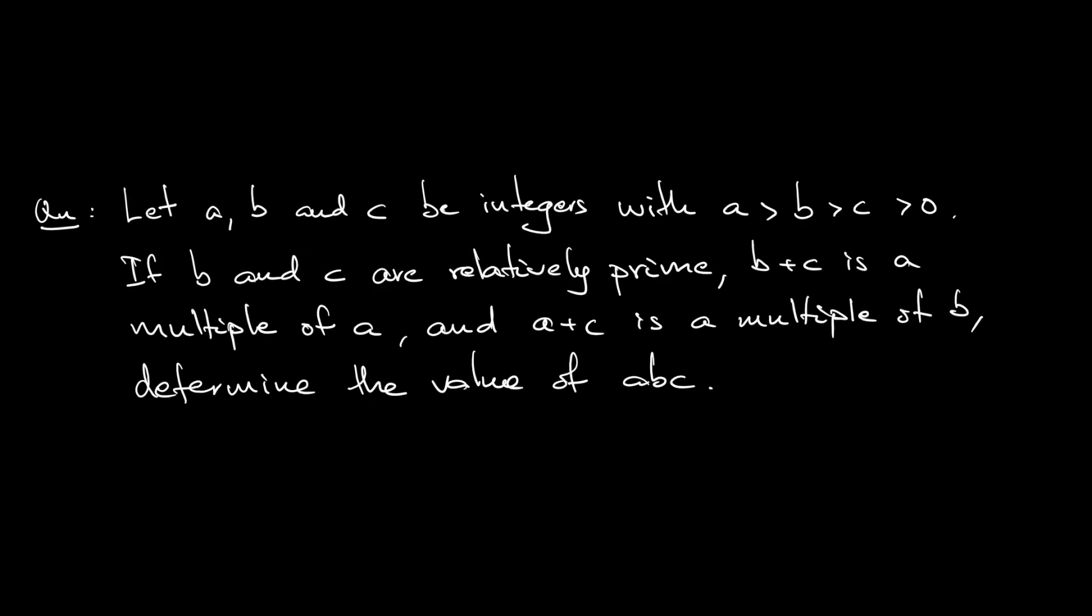The question says let a, b, and c be integers with the condition that a is strictly greater than b, b is strictly greater than c, and c is strictly greater than 0. If b and c are relatively prime, b plus c is a multiple of a, and a plus c is a multiple of b.